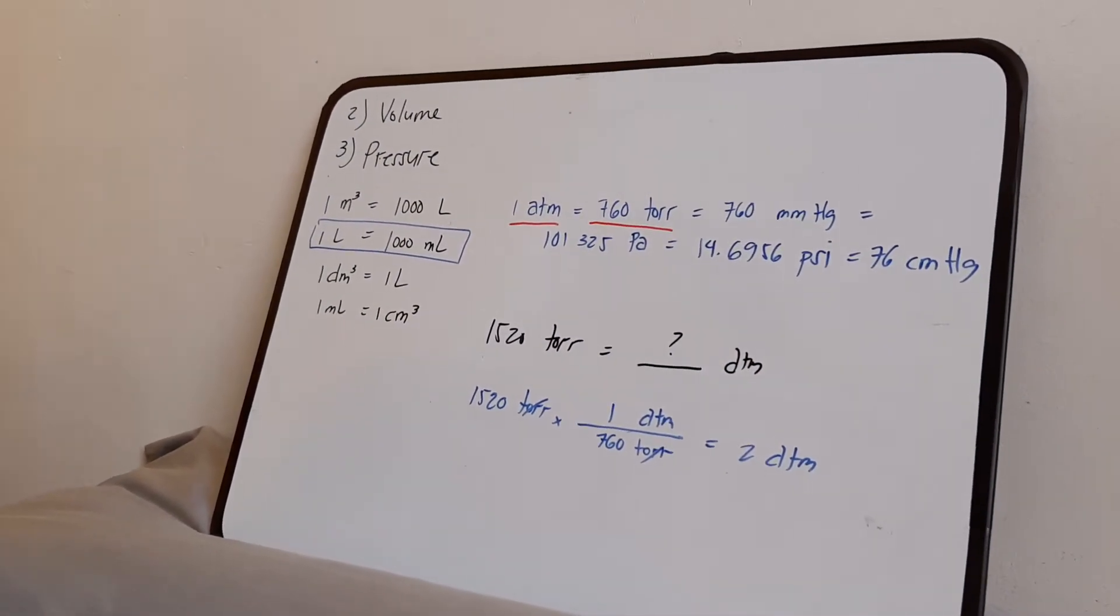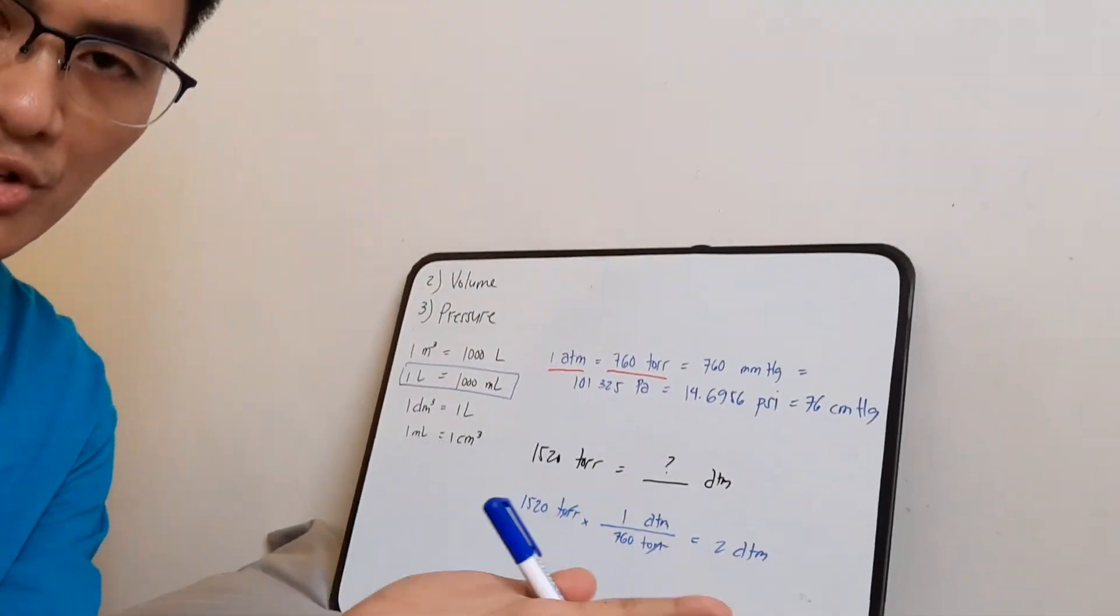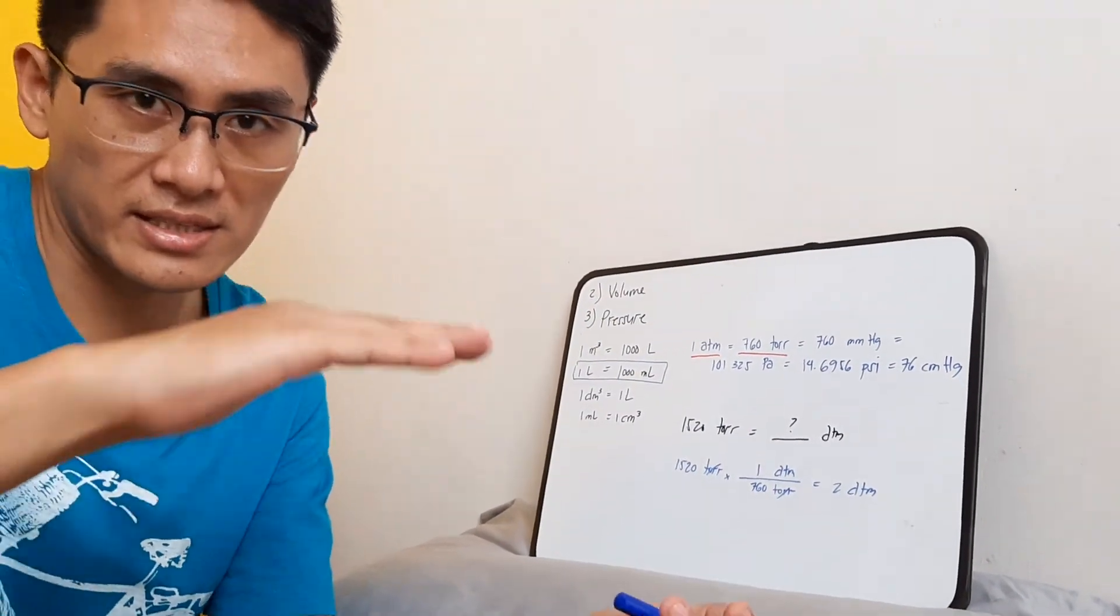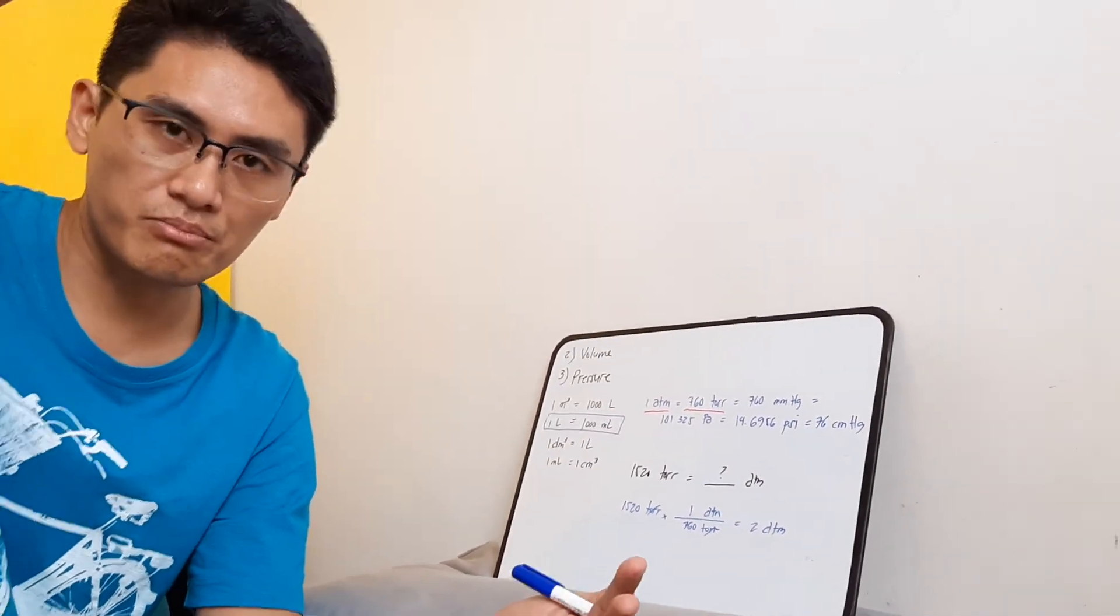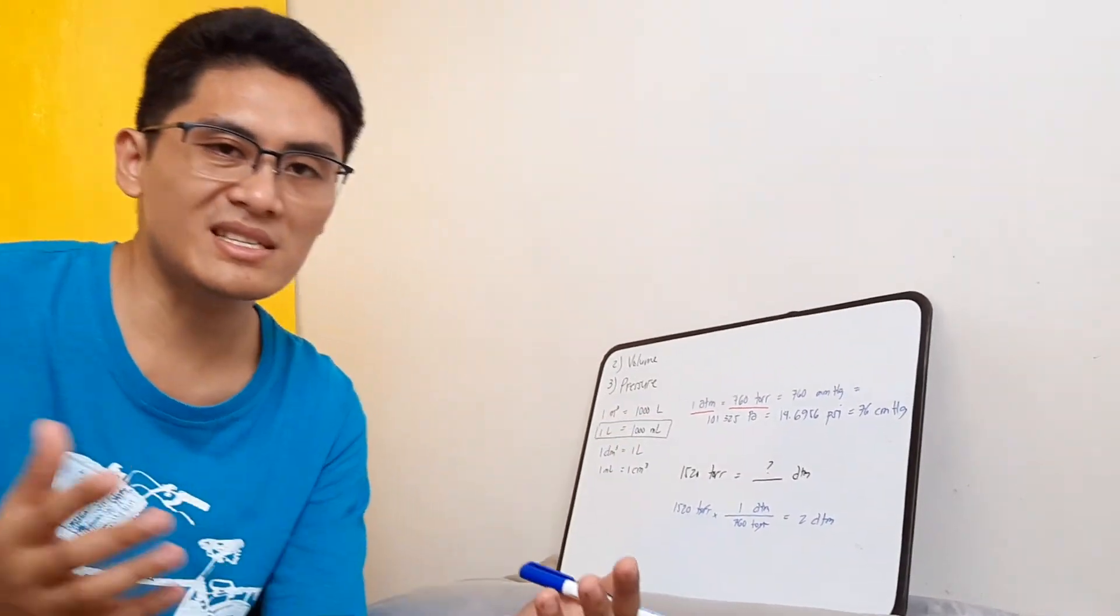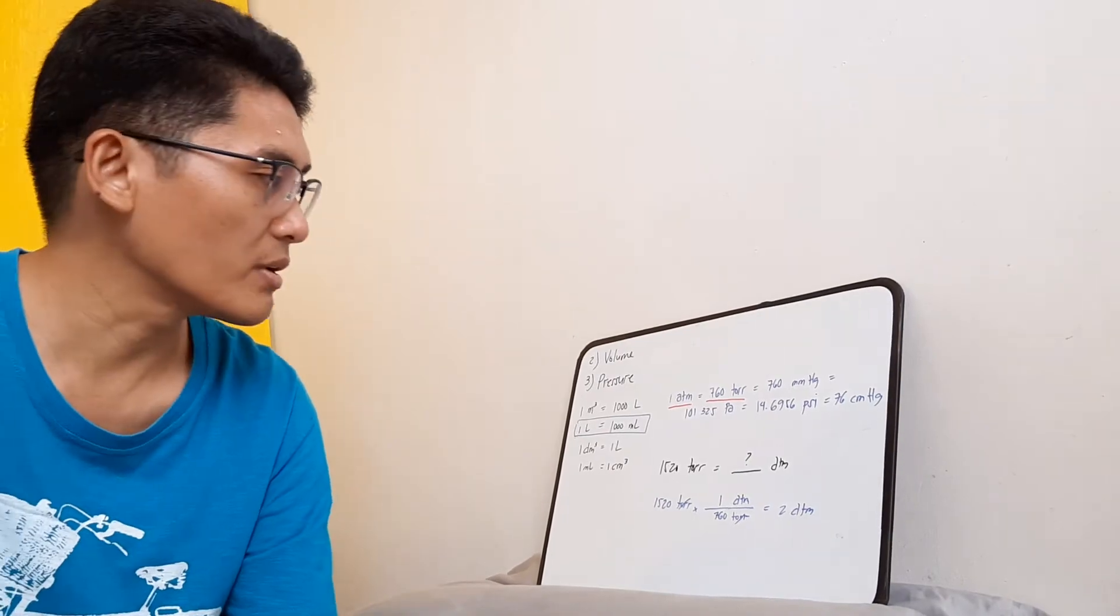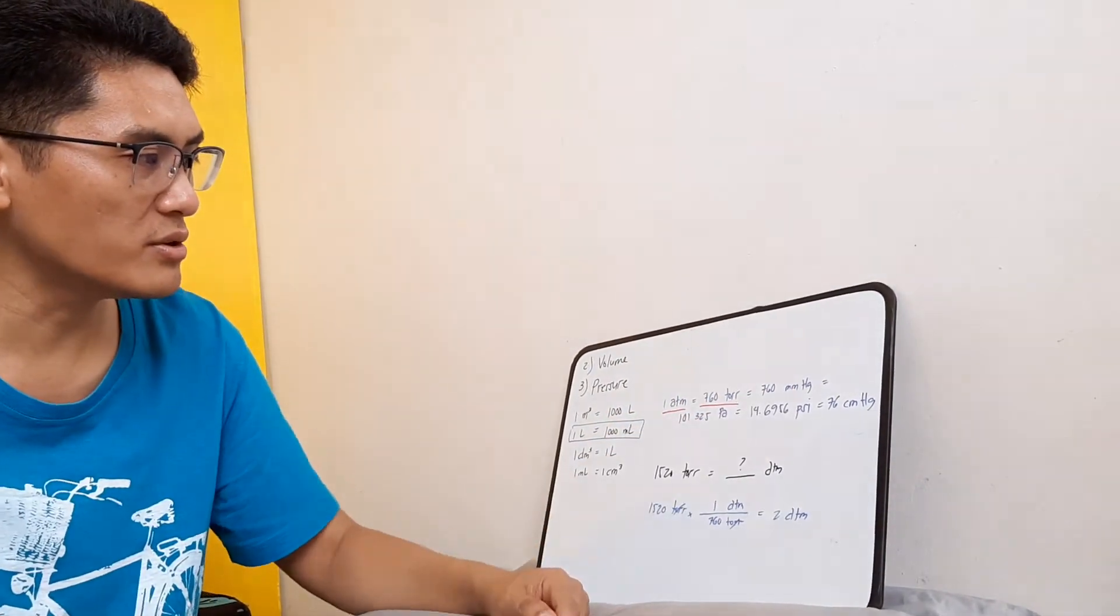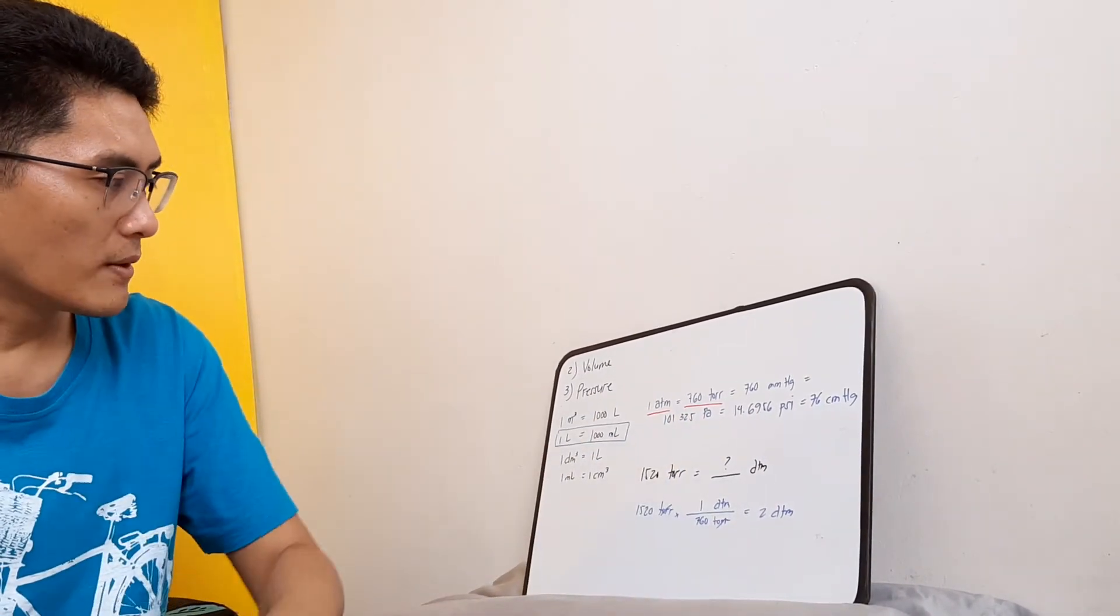So again, remember that these are just units. This is atmosphere. One atmosphere is actually the pressure that we can feel from our own atmosphere if we are at sea level. Obviously if we go higher somewhere, like for example somewhere in Tibet, the atmospheric pressure drops down. But 1 atm is the atmosphere of our own atmosphere at sea level. Torr is just another unit. Millimeters of mercury is another unit. Centimeters of mercury is another unit. Pounds per square inch, and pascal.